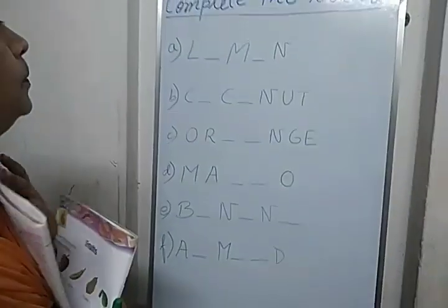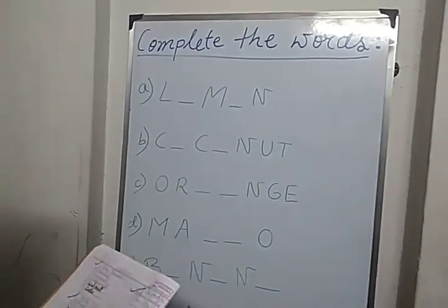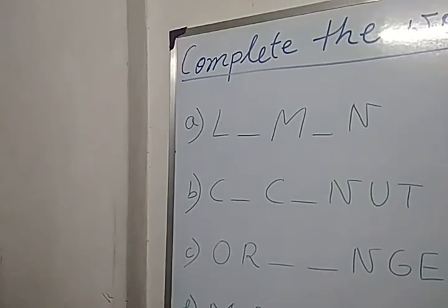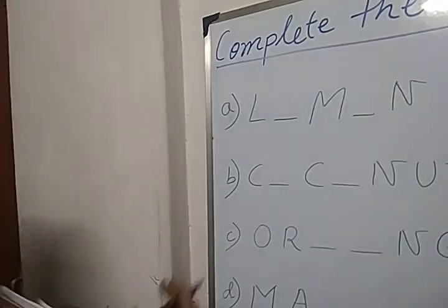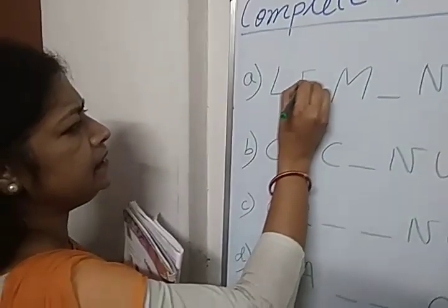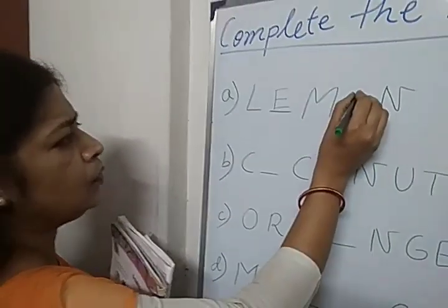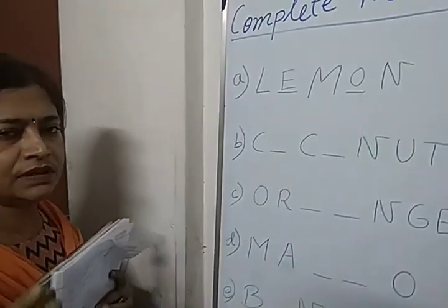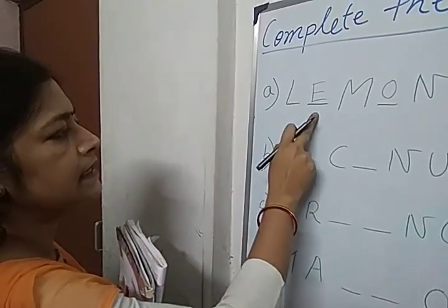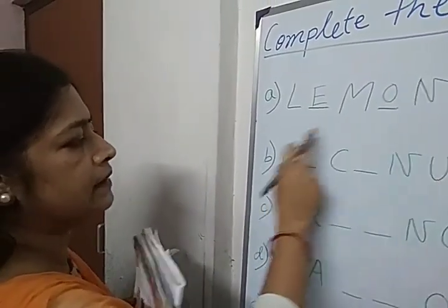Okay, now your board work is to complete the words. Lemon. Do you know the lemon spelling? L-E-M-O-N. Spell with me: Lemon — L-E-M-O-N. Lemon.